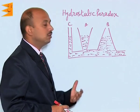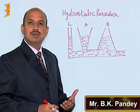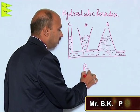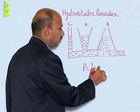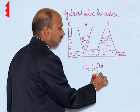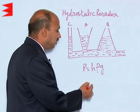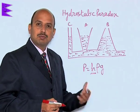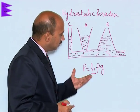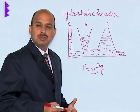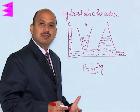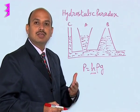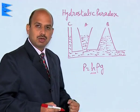Now, see how we have done here: the pressure exerted by a liquid column is P = hρg. Here we can see that the pressure depends on height. There is no area of cross-section in this formula, which means the pressure due to a liquid column is independent of the area, because it does not appear in the formula.